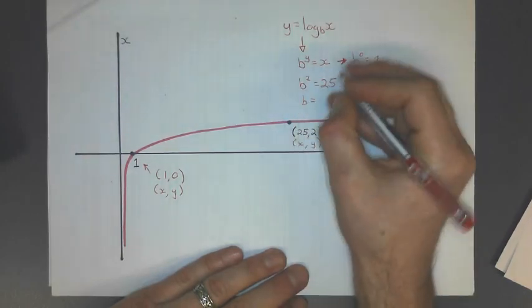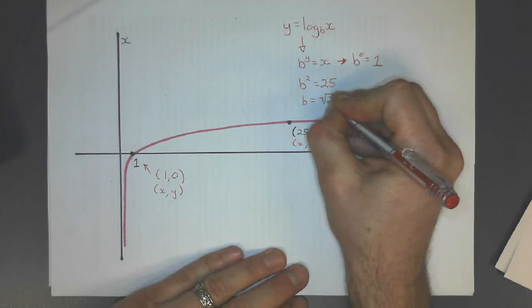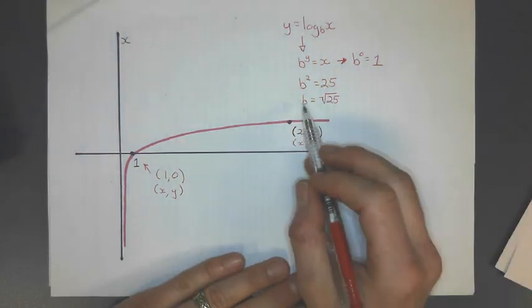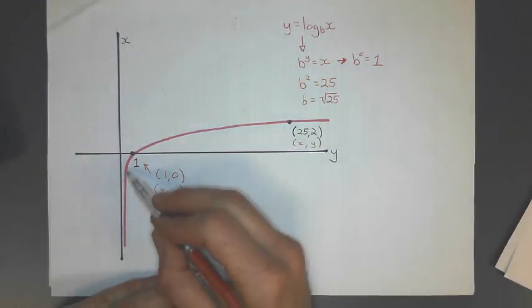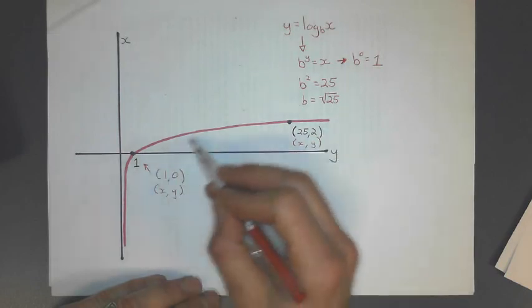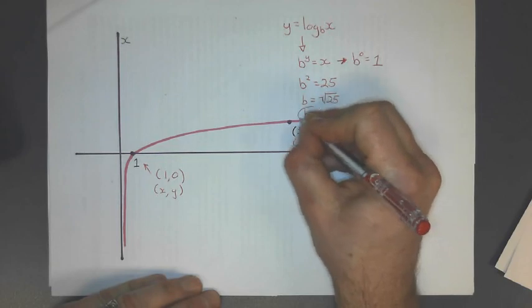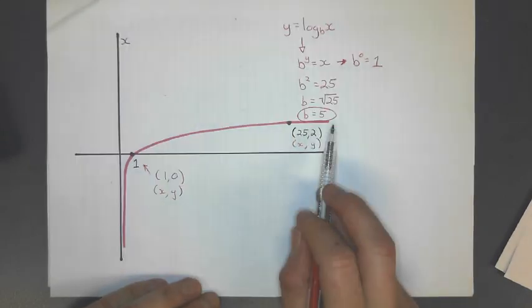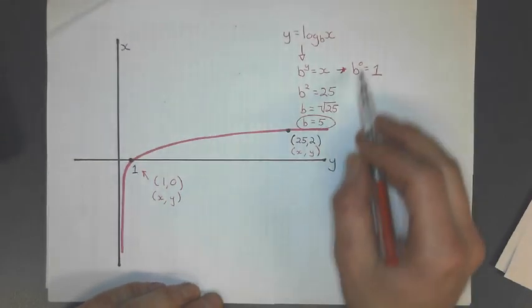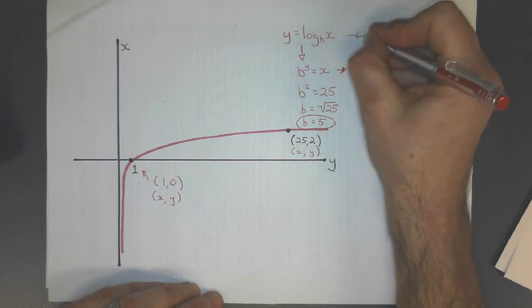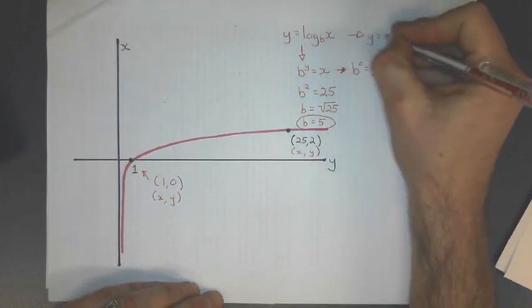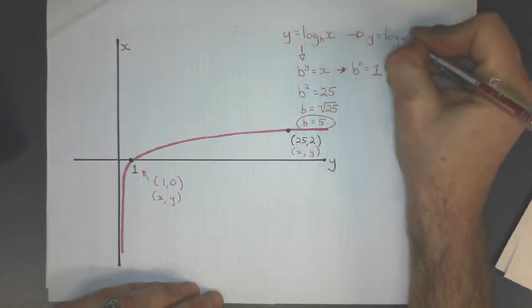The opposite of squaring is square root of 25. And I'm not going to plus or minus that, because b is positive if the log curve is shaped this way. If it is increasing, the base number is going to be positive, and it's going to be 5. And so what I do is I take that and rewrite it into the equation up here of y equals log base 5 of x.